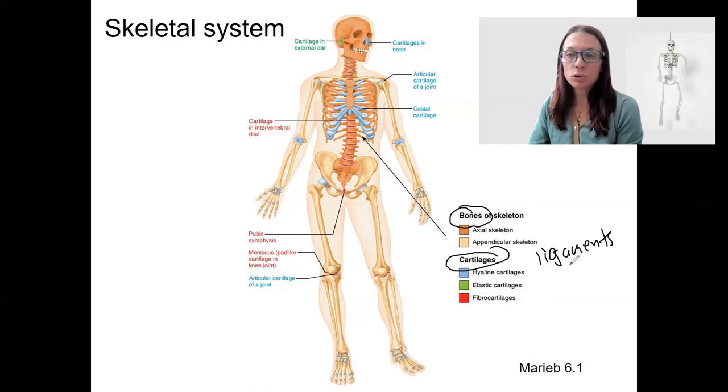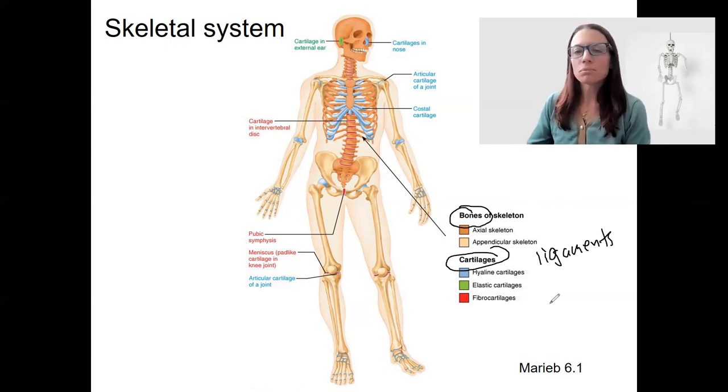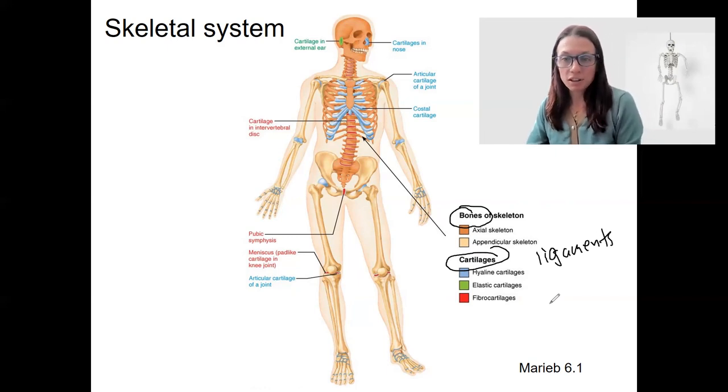And then we'll also talk about tendons when we get to the muscular system. Tendons link muscle to bone, so they're part of the musculoskeletal system, which are two very closely related systems that allow you to move. So first, the structures, the bones of your skeleton.